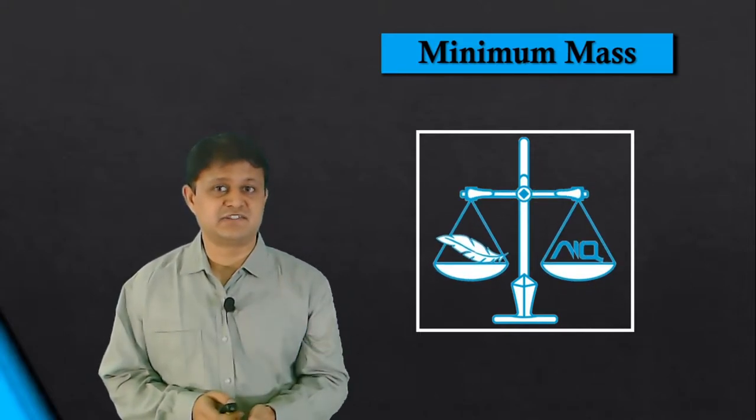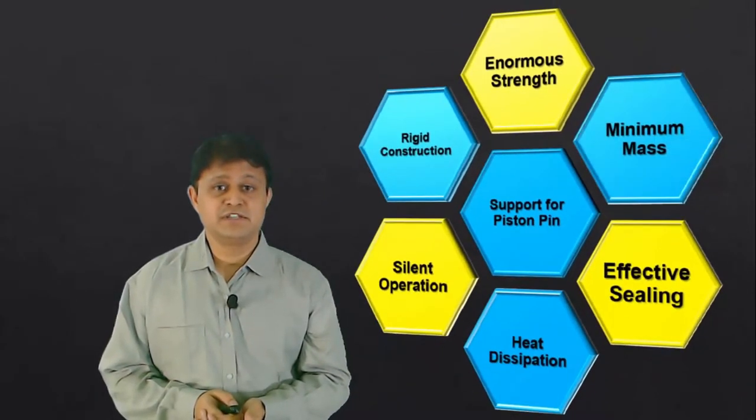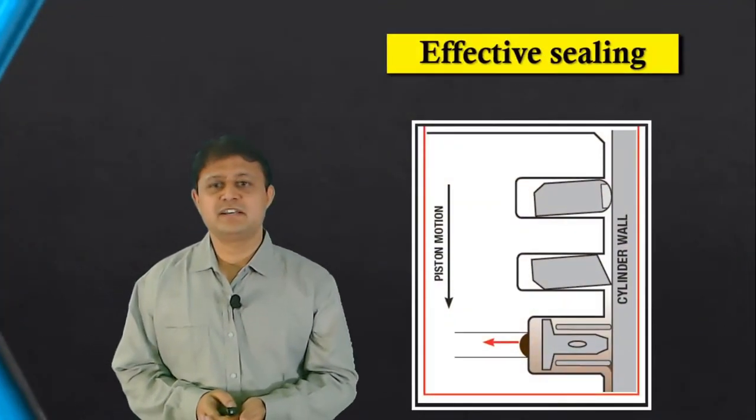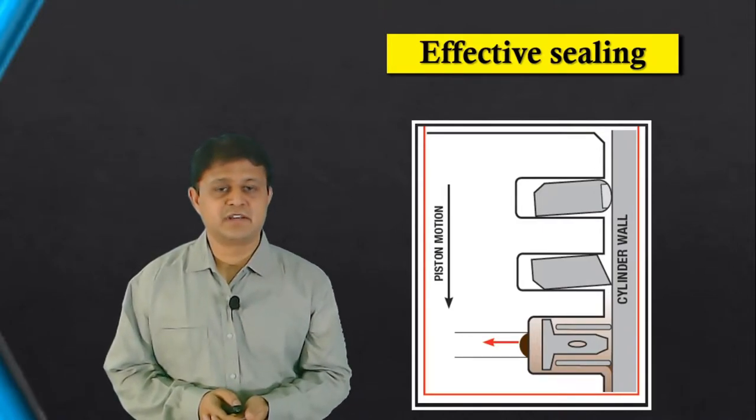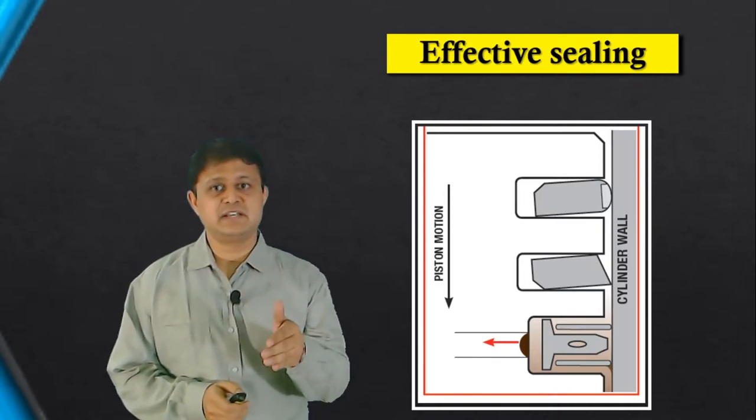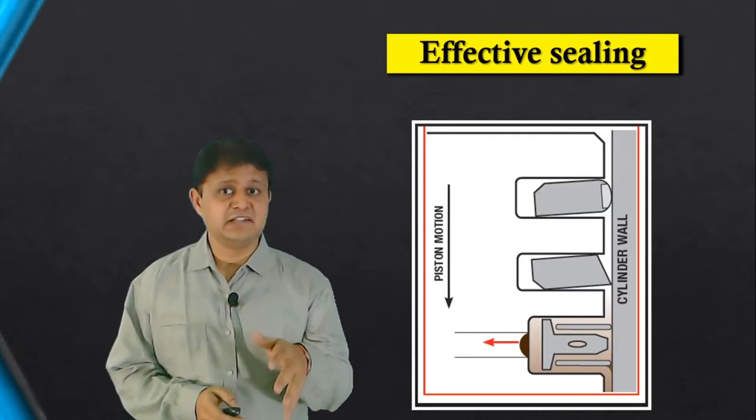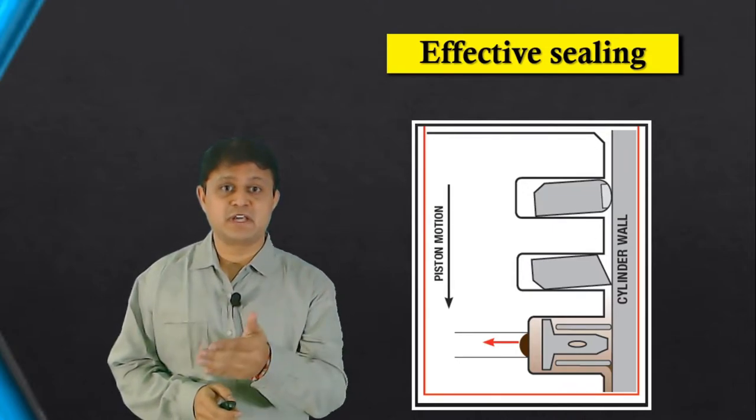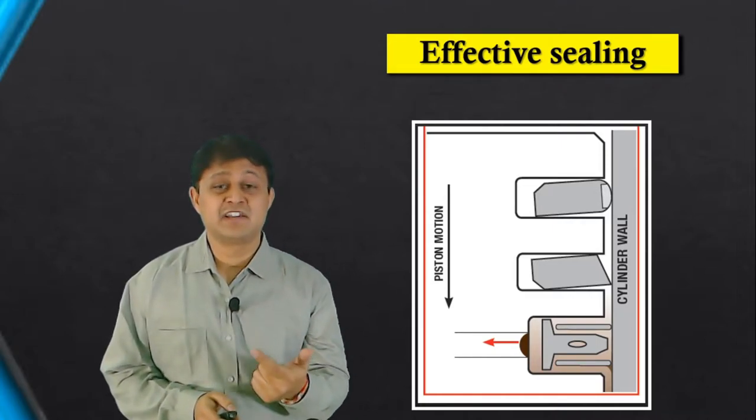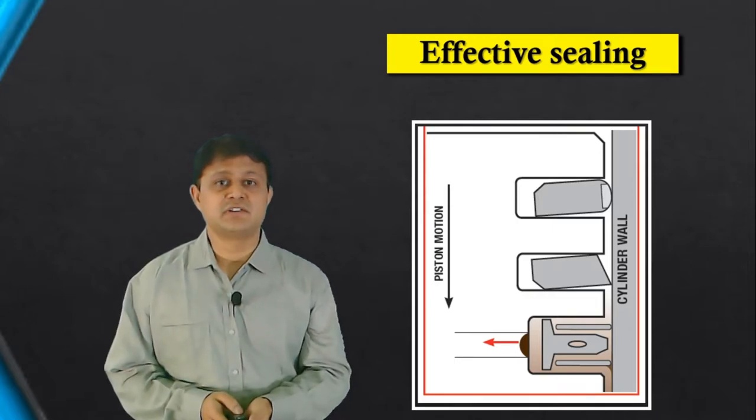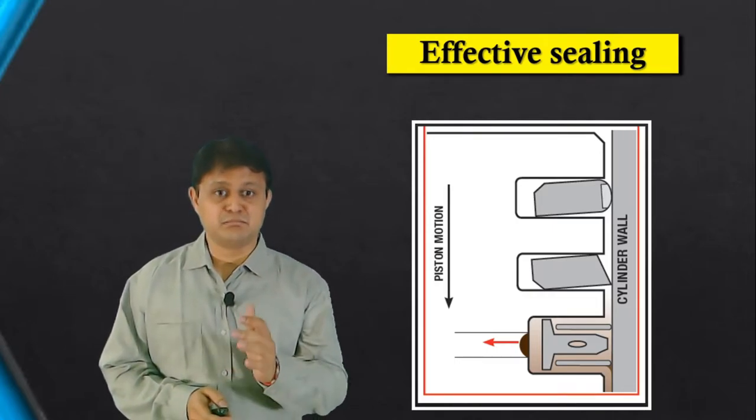The third consideration is effective sealing. In any internal combustion engine, sealing between piston and cylinder wall must be effective. If sealing between these two fails, combustion gases will escape into the crankcase, leading to power loss, oil contamination, sludge formation, and in extreme condition it will lead to seizure of engine. So sealing must be effective.